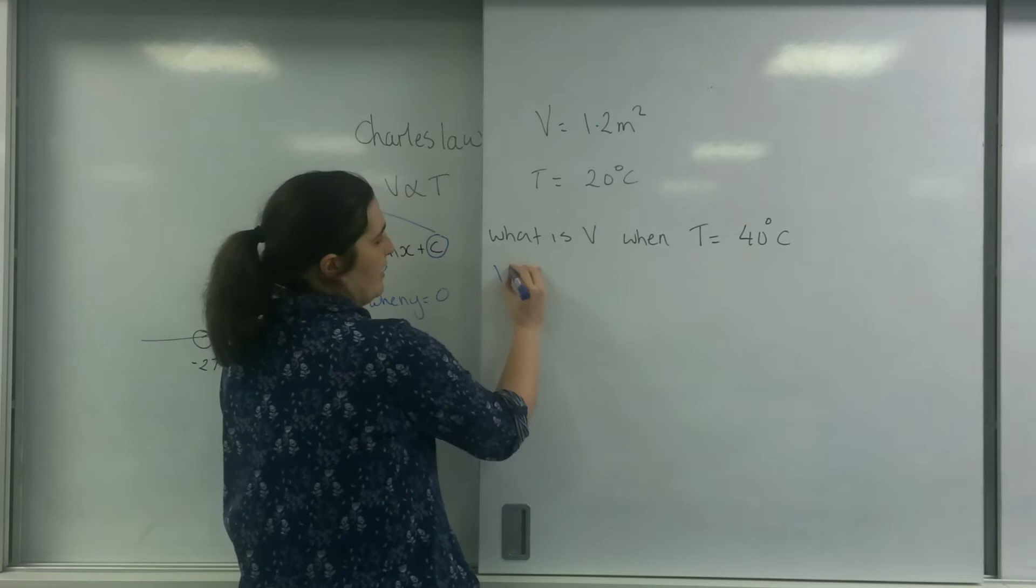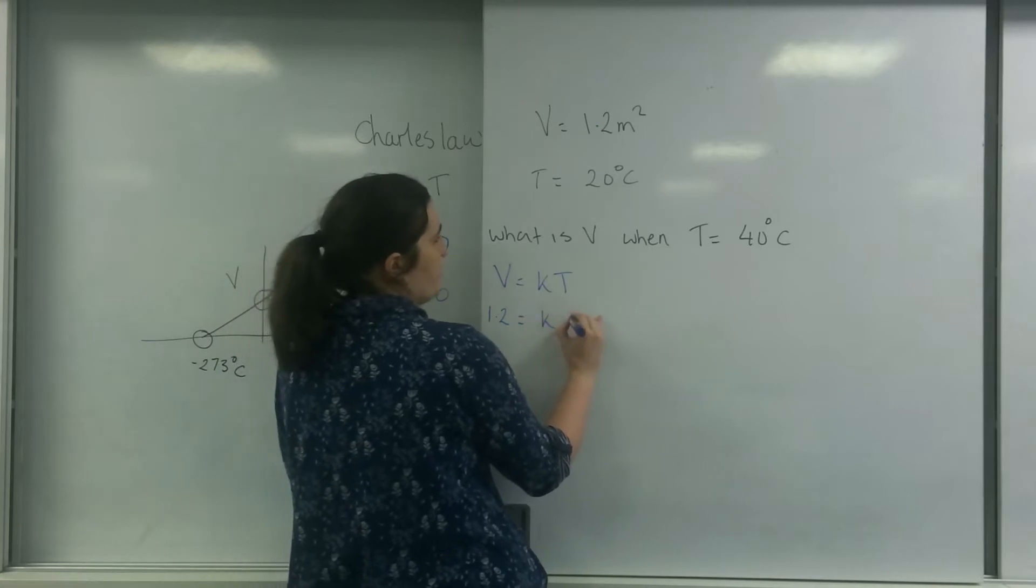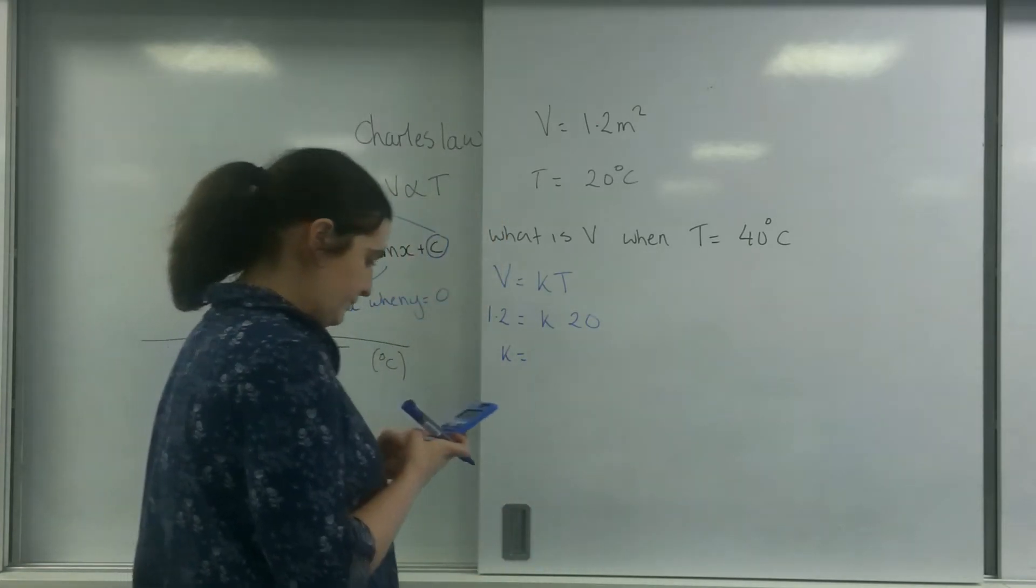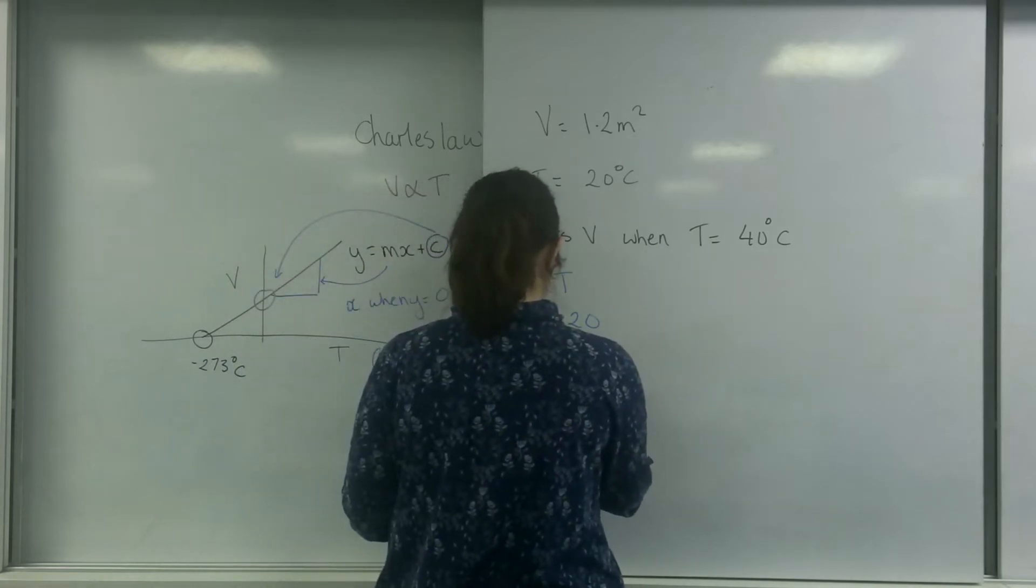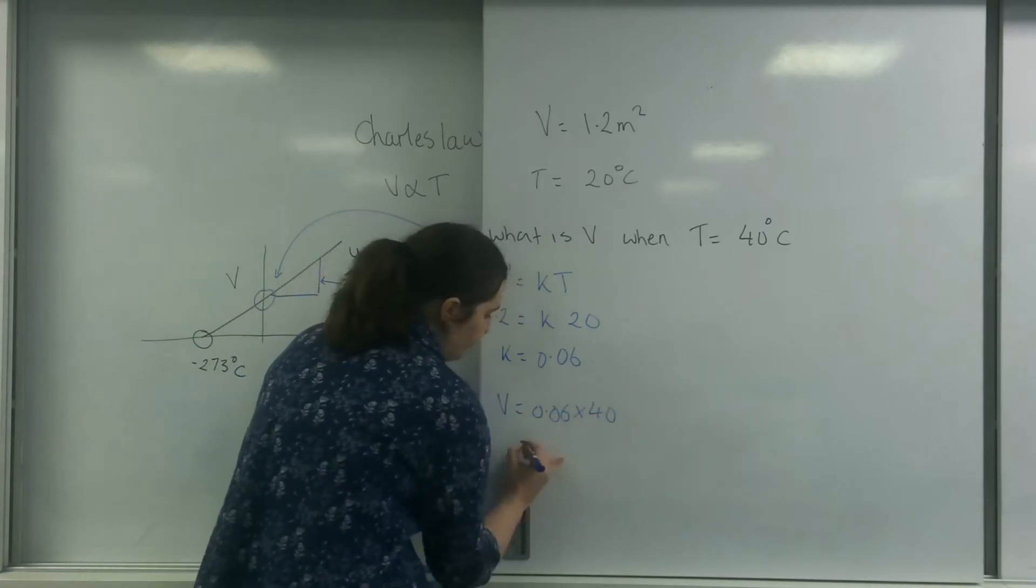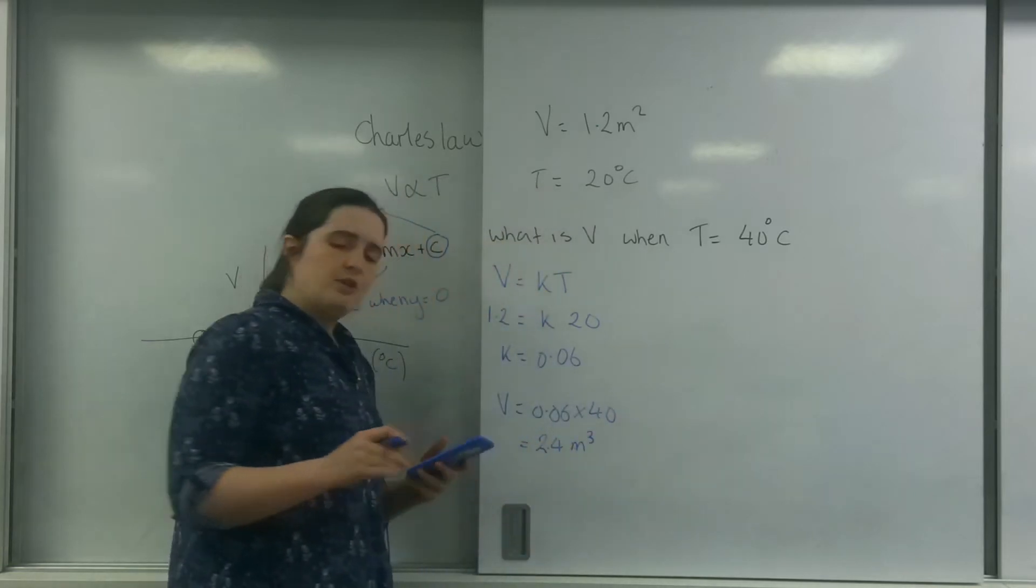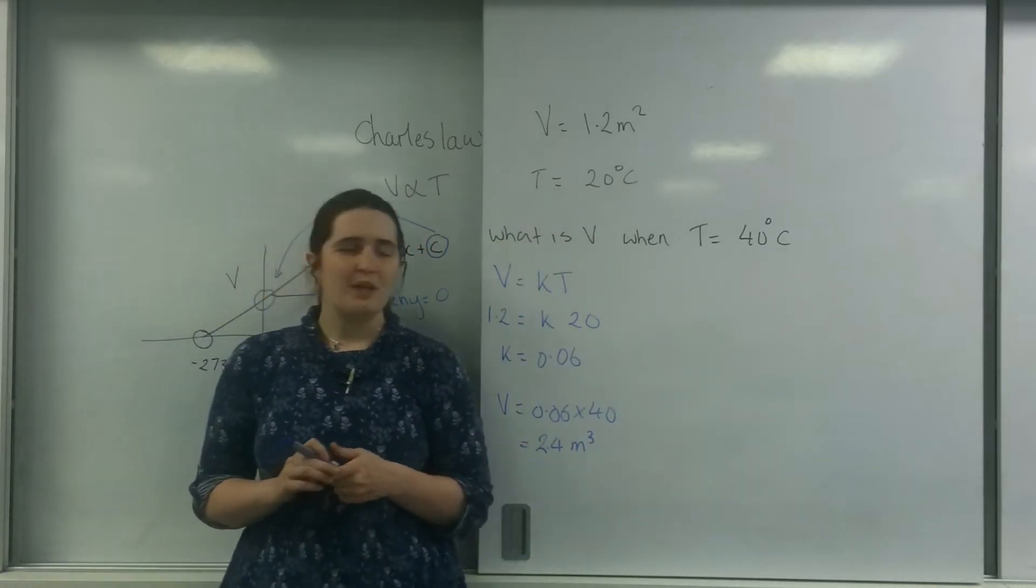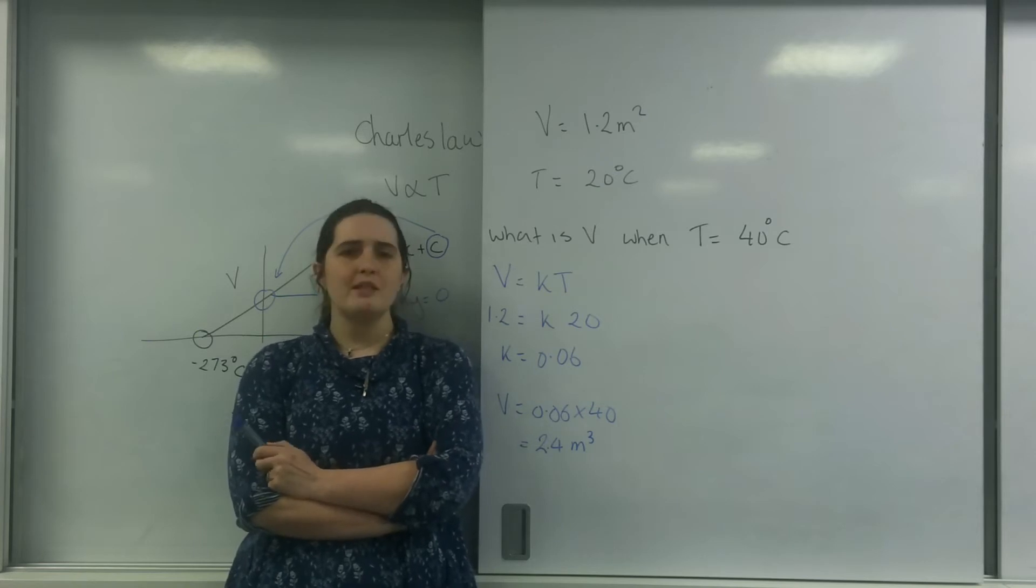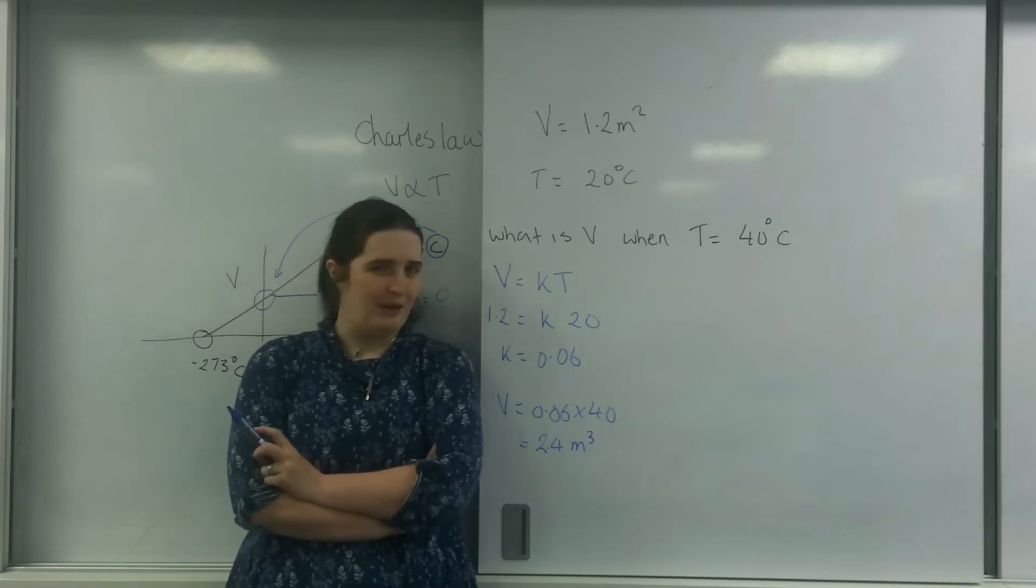So I know that V is a constant times by the temperature. So 1.2 equals a constant times by 20. So K equals 0.06. So I know this constant is the same afterwards, so V equals 0.06 times by 40. So my new volume is 2.4 meters cubed. So I'm saying that on a sunny day, if I do it by degrees C, when I go from 20 degrees C to 40 degrees C, this balloon or gas is going to double in volume. That doesn't happen in real life at all.